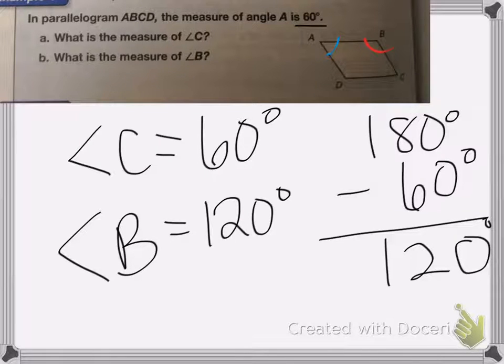So remember, when you're looking for an unknown angle, you'll usually have to subtract the known angle from 180 degrees.